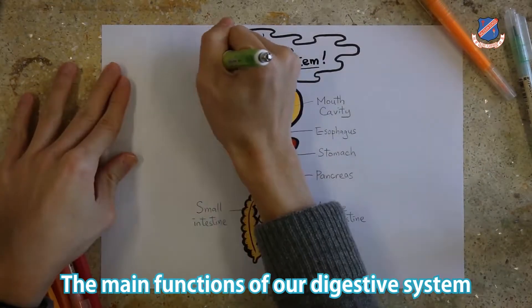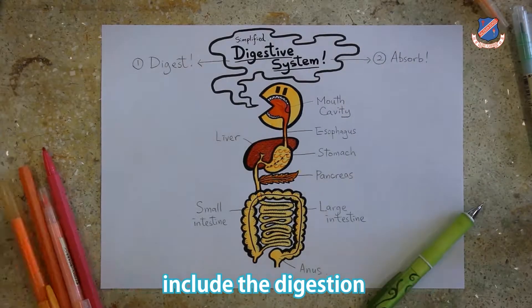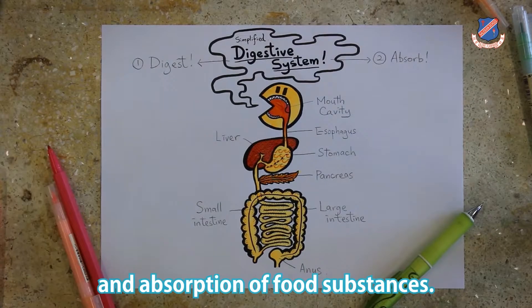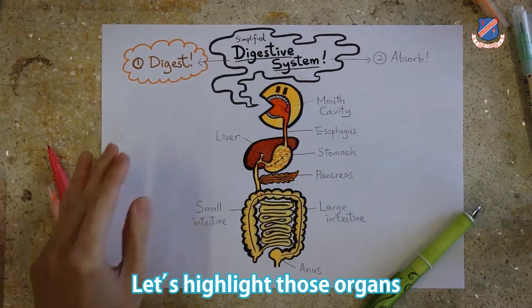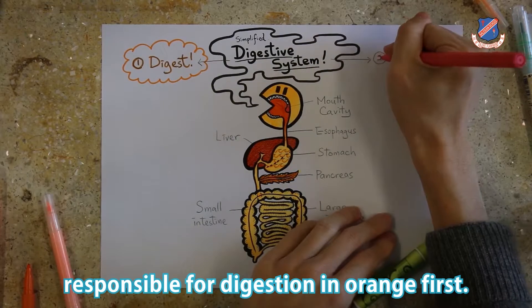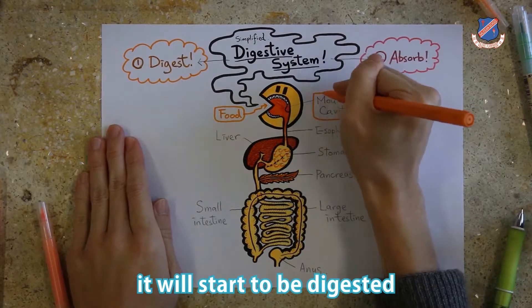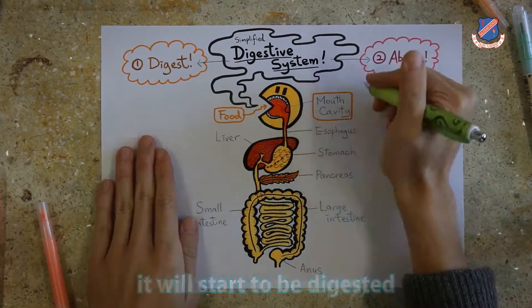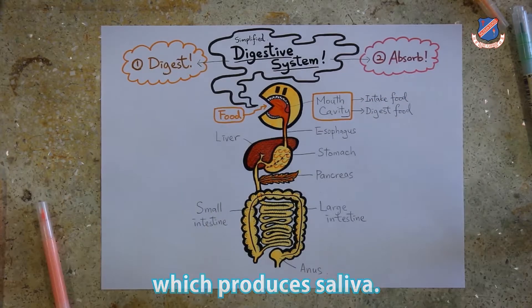The main function of our digestive system includes the digestion and absorption of food substances. Let's highlight those organs responsible for digestion in orange first. For example, when we eat a piece of bread, it will start to be digested in our mouth cavity, which produces saliva.